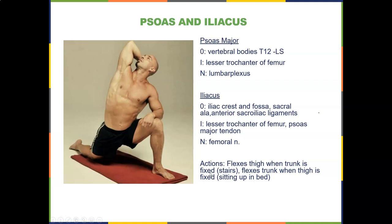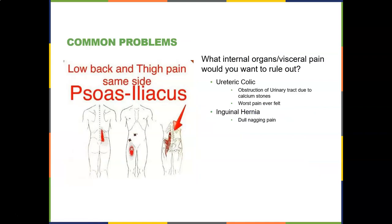When the trunk is fixed — standing up — the iliopsoas flexes the thigh, like going up stairs. When the thigh is fixed — sitting up or doing a sit-up — it flexes the trunk. That's why going too far up in a sit-up means your psoas major and iliacus take over, and you're no longer working the rectus abdominis. Together they go by the name iliopsoas.